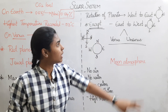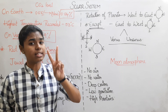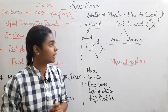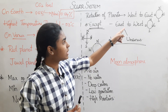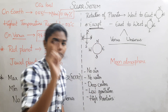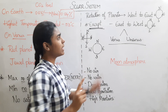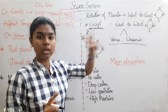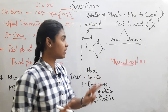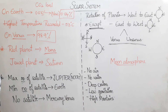Every planet rotates from west to east, except two planets. Those two planets rotate in the opposite direction — from east to west — in the anticlockwise direction. The two exceptional planets are Venus and Uranus.